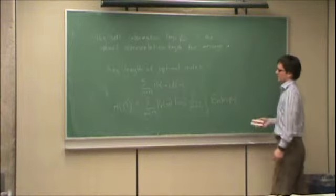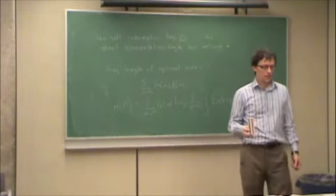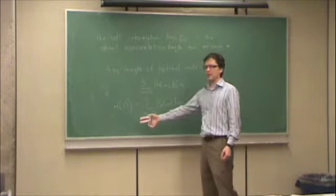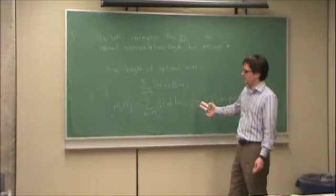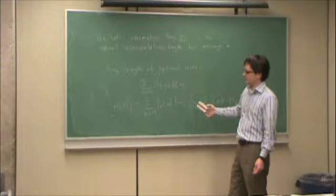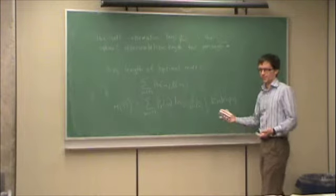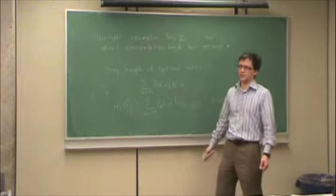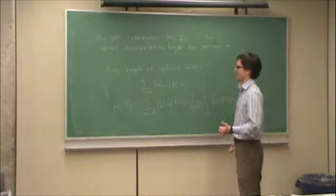So this is the fundamental quantity in source coding. There does not exist any representation of a source that is uniquely decodable and that does better than entropy. So in other words, this is the fewest number of bits you can use on average to represent a source uniquely and error free.